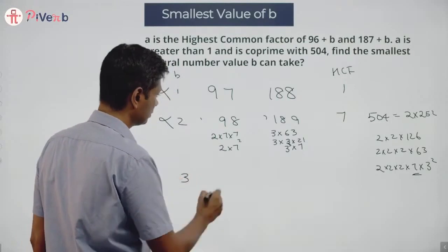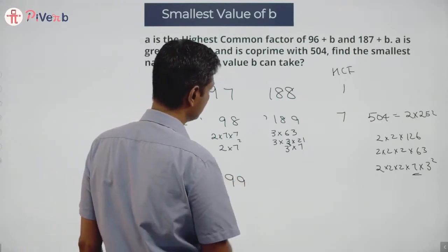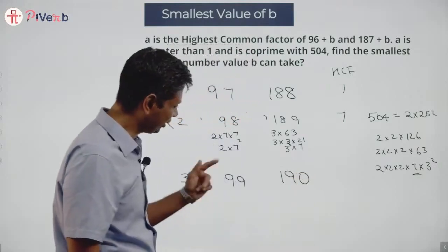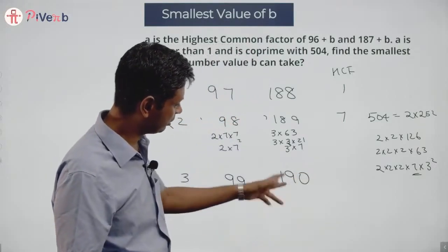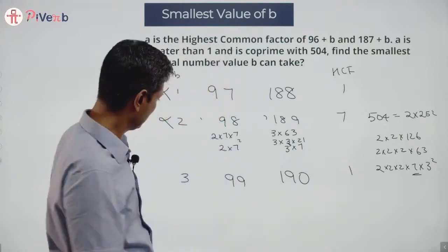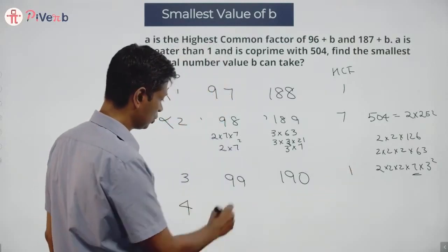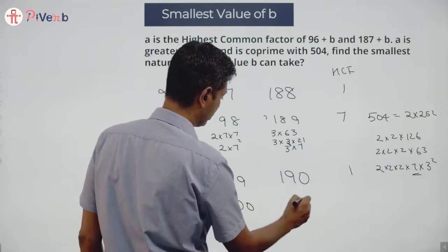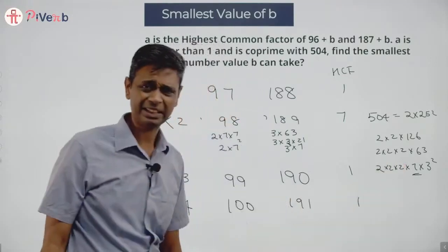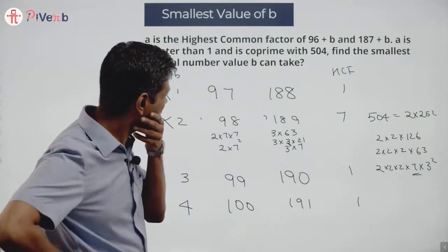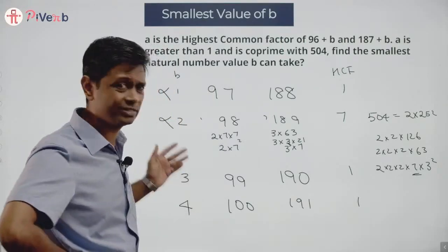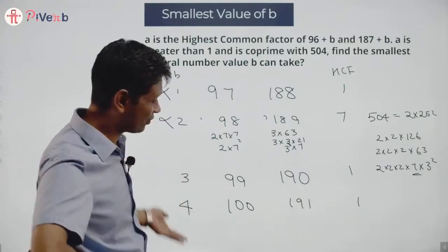Try B equals 3: numbers become 99 and 190. 99 is 9 times 11, and 190 is not a multiple of 9, 3, or 11, so they are coprime. Try B equals 4: numbers become 100 and 191, nothing in common. I can't keep trying 1, 2, 3, 4, 5, 6 — I need to find a method.